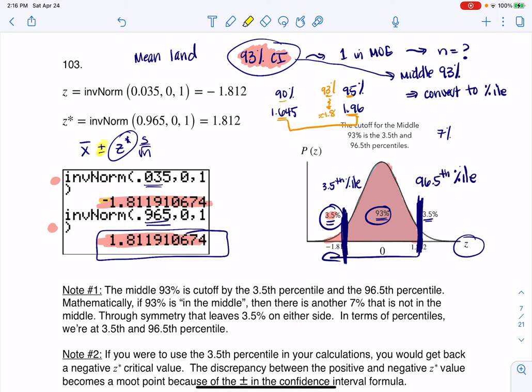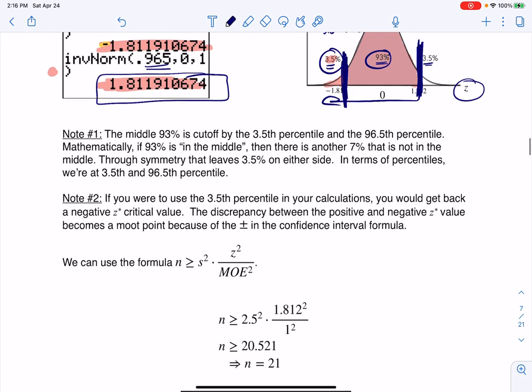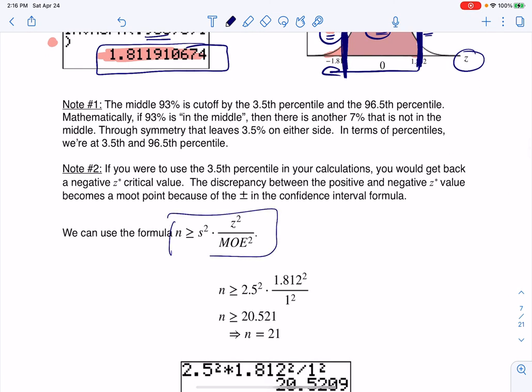So once we have that, then I'm ready to go. Let me scroll down here, and you can see there's my margin of error formula. So we're going to go ahead, and we knew our margin of error was 1. We knew our z-score was 1.812.